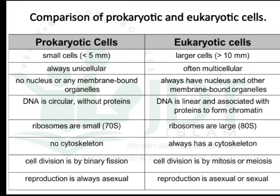DNA is circular and without protein in prokaryotes, whereas in eukaryotes DNA is linear and associated with protein to form chromatin. Ribosomes are 70S in prokaryotes but 80S in eukaryotes. There is no cytoskeleton in prokaryotes but eukaryotes always have one. Cell division is usually by binary fission in prokaryotes, and by mitosis or meiosis in eukaryotes. Reproduction is always asexual in prokaryotes but may be sexual or asexual in eukaryotes.